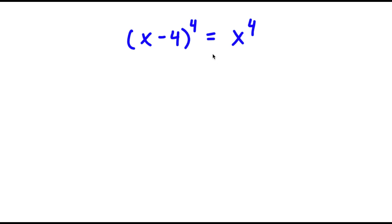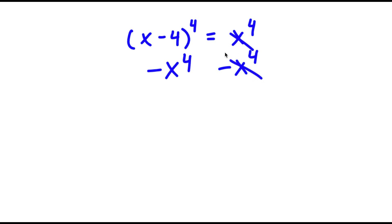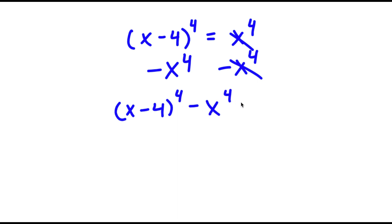To solve this, I'm going to first start by subtracting x to the power of 4 on both sides. These two cancel out, and now I have x minus 4 to the power of 4 minus x to the power of 4 is equal to 0.